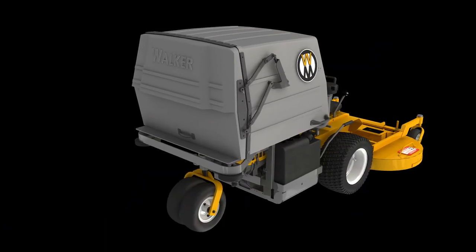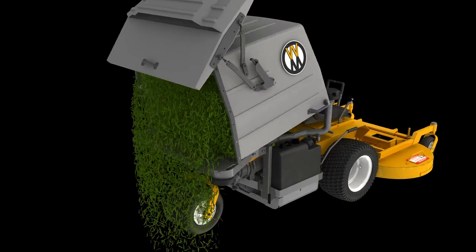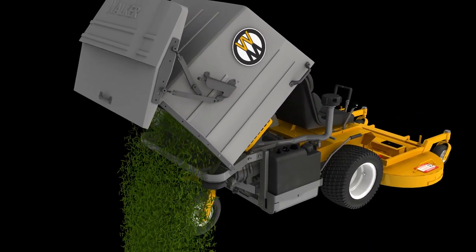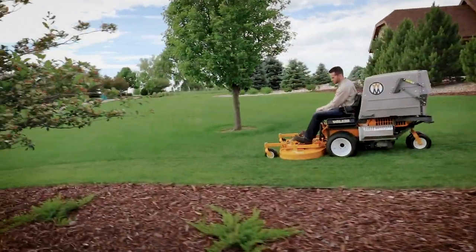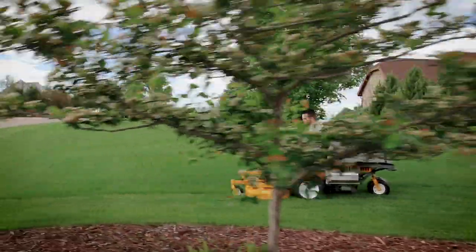The GHS catcher door is hinged for easy tailgate dumping and maintains a low height profile even when open. There are many things that make the Walker mower unique in the zero turn mowing market, and the grass handling system is one of these key advantages.